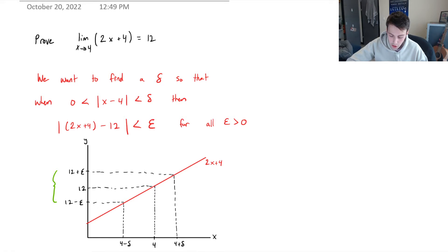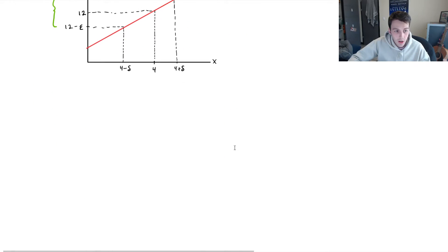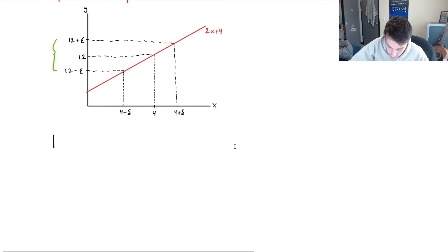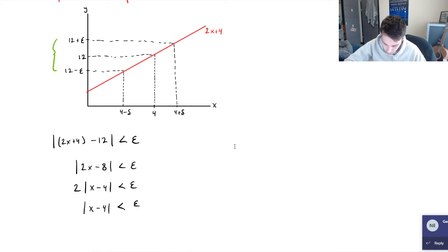So that's basically what it means. So before we actually start the proof, we need to do a little bit of scratch work. So remember, we want 2x plus 4 minus 12. We want this to be less than epsilon. This is the criterion that we are looking for. The function minus what the limit evaluates to, it needs to be less than that tolerance epsilon. So just simplifying this, 4 minus 12 is minus 8, so we've got 2x minus 8 less than epsilon. I can factor out a positive 2. I'm left with x minus 4 less than epsilon. Divide out the 2. We've got absolute value of x minus 4 is less than epsilon over 2.